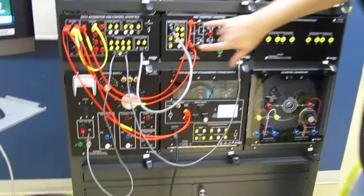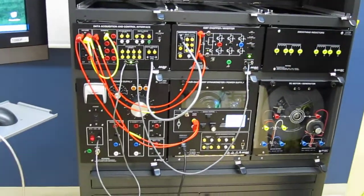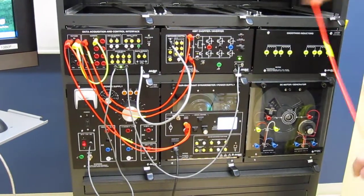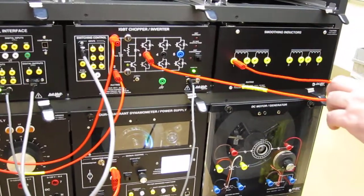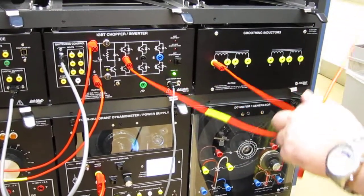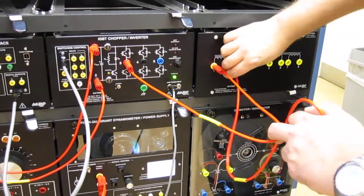But in my case, I'm taking my DC, I want to chop that, go through a smoothing inductor, then to my DC machine.